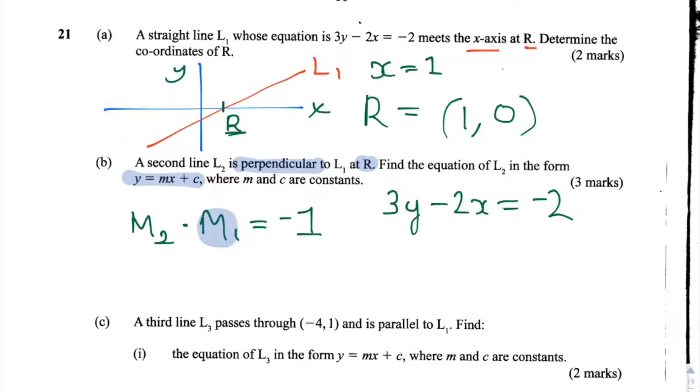So let's start with the first step which is finding out the value of m1. To do that we're going to rearrange this equation 3y minus 2x equals minus 2 to get it into the form y equals mx plus c. Let's move this 2x to the other side by adding 2x to both sides. So we get 3y equals 2x minus 2.